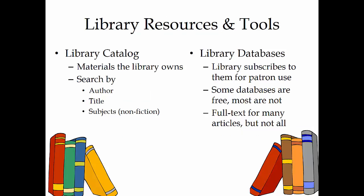The library catalog is a database of materials the library owns. However, there are other databases that provide online access to magazines, newspapers, and journals. These periodical databases are developed by companies that decide the resources most people want to use, and do not necessarily reflect the interests of the community.